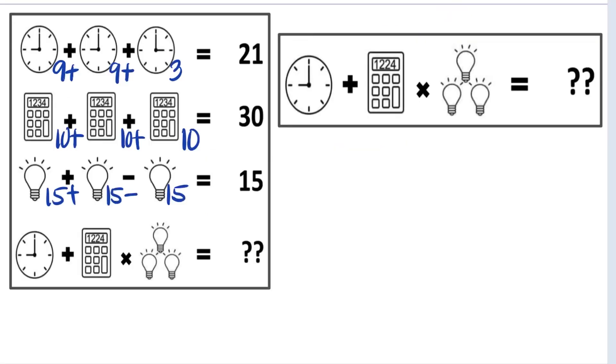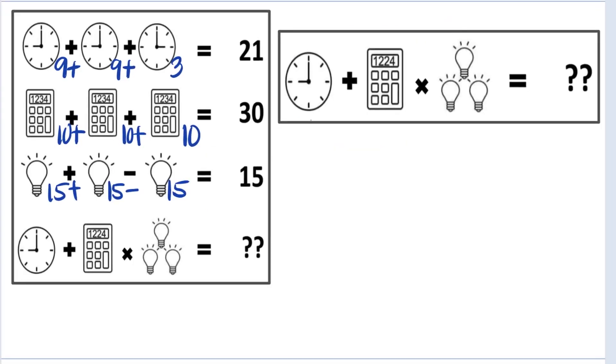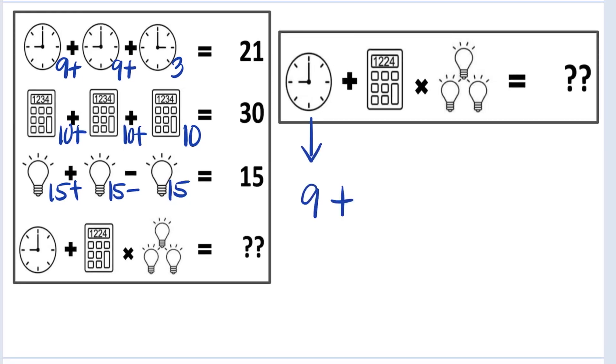And now let's evaluate equation number 4. Since the time is 9 o'clock, this means that the value of the clock is 9. The calculator screen has the numbers 1, 2, 2, and 4.